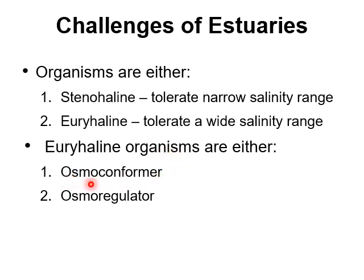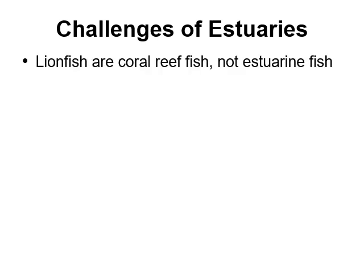Among euryhaline organisms, there are two strategies: osmoconformers and osmoregulators. Osmoconformers just conform to whatever the salinity is outside — if it's really salty outside, they're salty on the inside; if it's fresh outside, they're fresh on the inside. Osmoregulators, on the other hand, control their internal salinity regardless of external conditions, maintaining a relatively constant internal salinity.